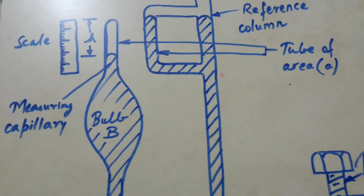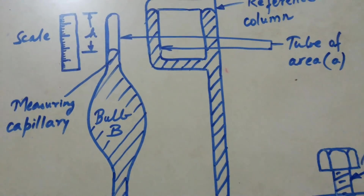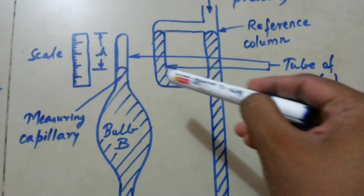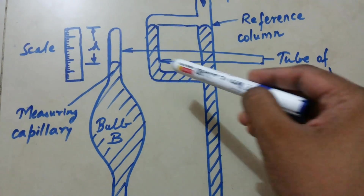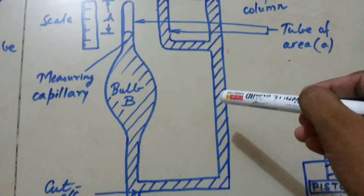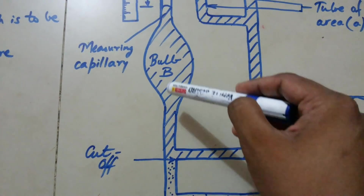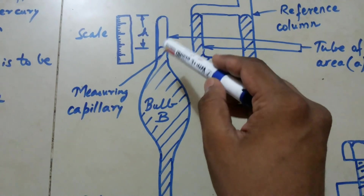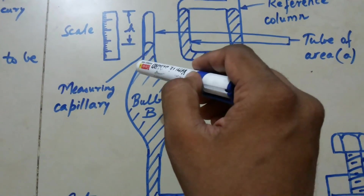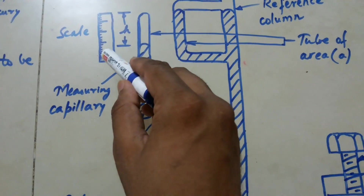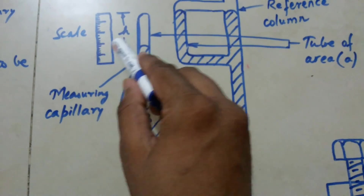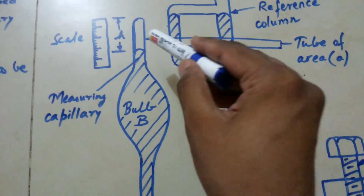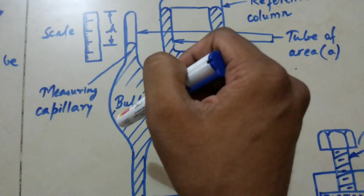Hi friends. Today's topic of discussion is the McLeod gauge. As you can see over here, this is a tube connected to a bulb, and then again the tube that is the measuring capillary and a scale, which is common to both this reference column and to the measuring capillary.